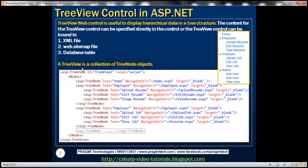A TreeView is a collection of tree node objects. We have a Nodes element and within that we have several TreeNode elements. The first is the Home tree node, then the Employee tree node, which contains three more tree nodes: Upload Resume, Edit Resume, and View Resume. A tree node can contain another tree node — that's how it displays hierarchical data. Along the same lines we have an Employer tree node with three child nodes, and an Admin tree node with three more child nodes underneath it.